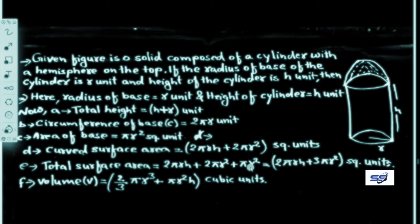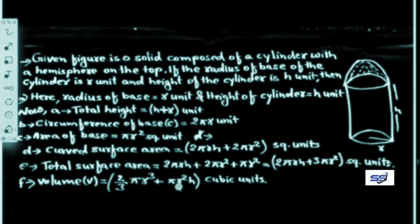When adding all three components, the total surface area formula simplifies to 2πRS + 3πR² square units. The volume formula is V = 2/3 πR³ + πR²H cubic units. Volume is always expressed in cubic units.